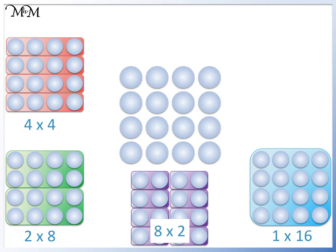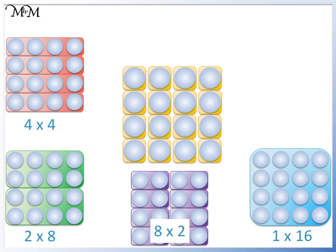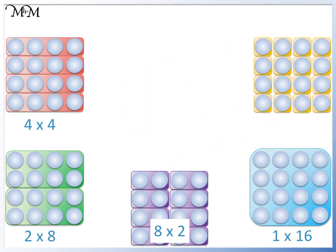Each counter could also be in its own group, so in a group of 1. Therefore, we have 1, 2, 3, 4, 5, 6, 7, 8, 9, 10, 11, 12, 13, 14, 15, 16 groups of 1, so we have 16 times 1.